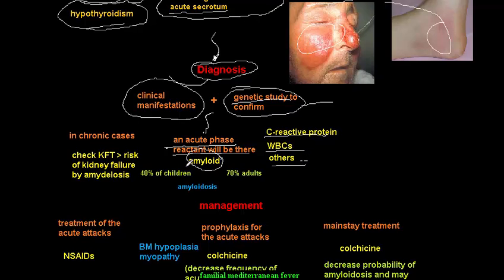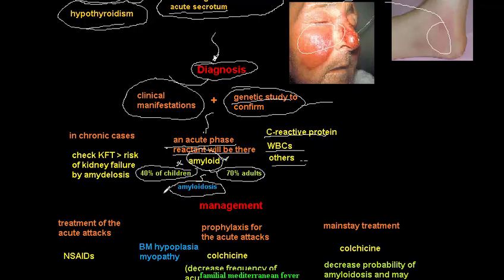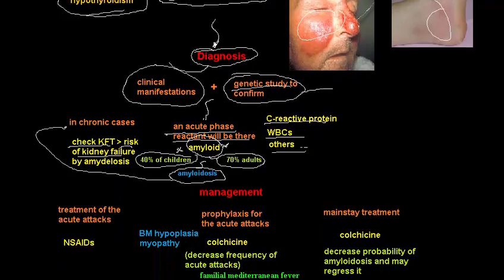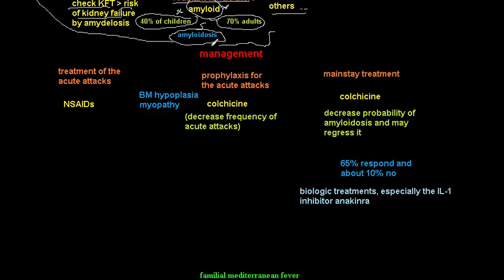Any acute phase reactant may increase in FMF. Importantly, when amyloid increases — which happens in 70% of adults and about 40% of children — the patient develops amyloidosis, the most dangerous complication of FMF. Amyloid precipitates in the kidney, potentially leading to kidney failure in chronic cases. The most common and most important cause of death in FMF is end-stage renal disease.